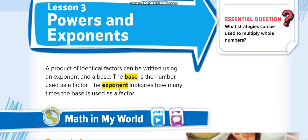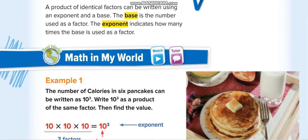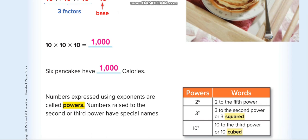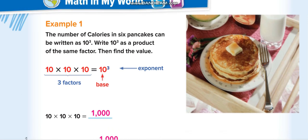We have two things: the first is base, and the second is exponent or power. The big number is the base and the small number above it is the power or exponent. For example, 2 is the base, 3 is the power. 10 is the base and its small number is the power or exponent.